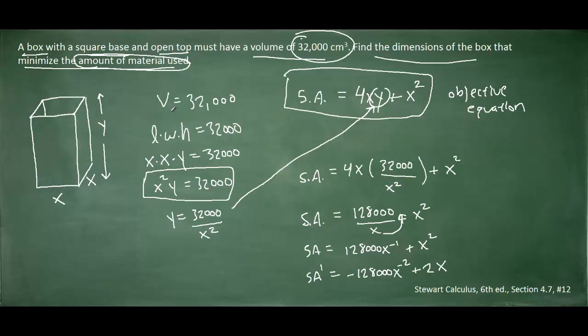Now to find the minimum value of a function, after differentiating the function, you set it equal to 0 and solve for x. And we'll come over on this side over here to do that. We can add the 128,000 x to the negative 2 to the other side. We can divide both sides by 2. We can then divide both sides by x to the negative 2. And finally, if we cube root both sides of this equation, we obtain x equals 40.